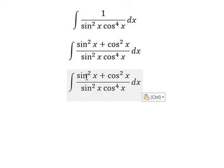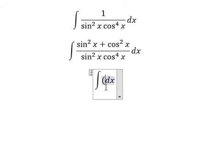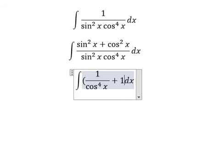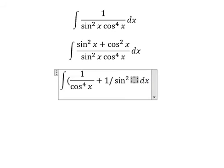So this one divided by this one, and this one divided by this one, we will get one over cosine x to the power of four, plus one over sine x squared cosine x squared.